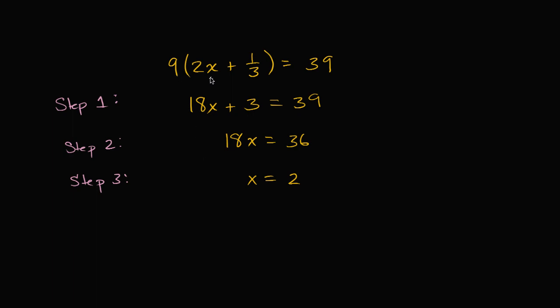I have an equation: 9(2x + 1/3) = 39. Someone has worked it out in step 1, step 2, and step 3. They get to the solution x = 2. Pause this video and figure out: is this solution correct? Did all of the steps make logical and algebraic sense? Or did they make a mistake in one of these steps? And if so, which step?